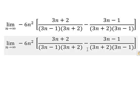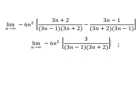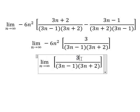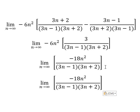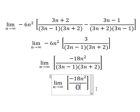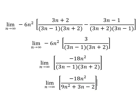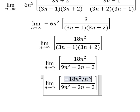So three n minus three n you get zero. Number two minus negative number one we have positive. Negative six n squared with number three we have negative 18 n squared. Now we need to expand this one. Next, we divide by n squared on numerator and denominator.